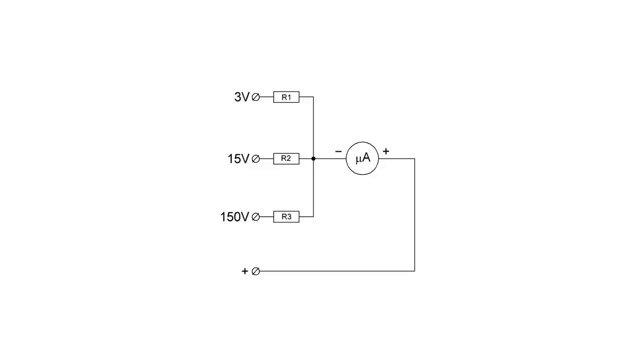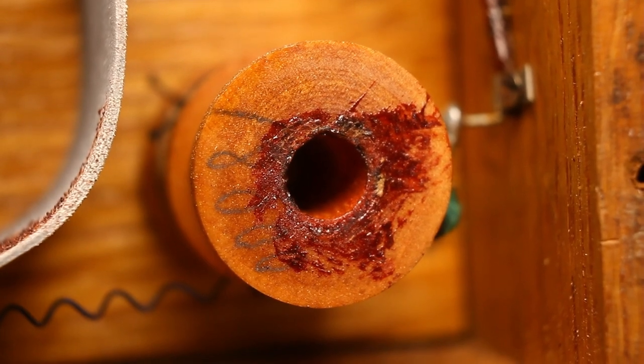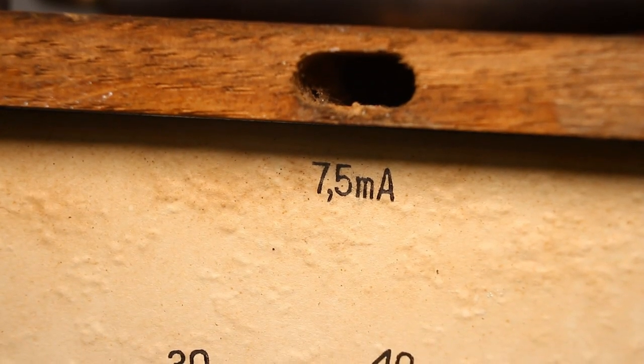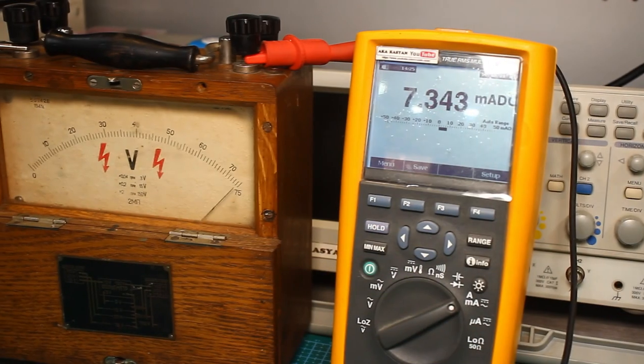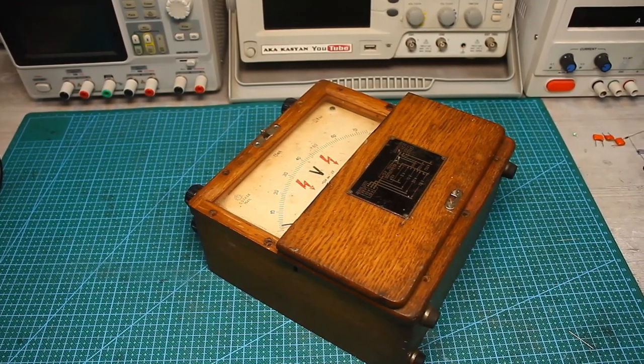The circuit for such voltmeters are very simple. Microammeter and a set of resistors for different ranges. In some cases, resistive dividers can be used. On the scale, you can see the inscription 7.5 mA. This is the maximum current consumption of the indicator in the event of a complete deflection of the arrow. And apparently, this is true.